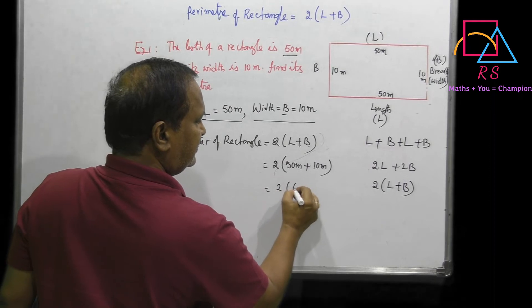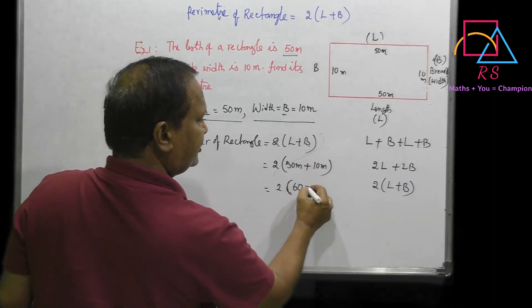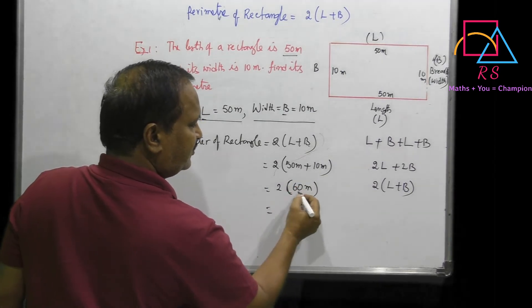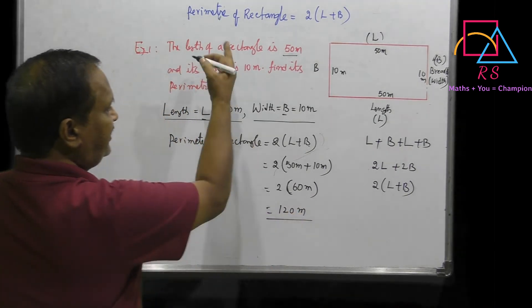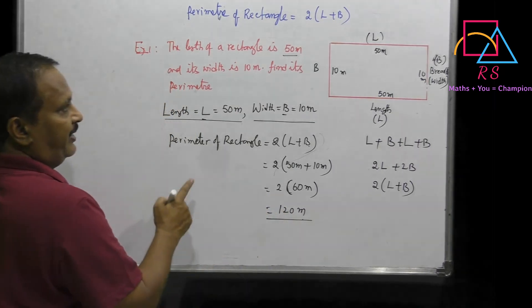50 meters plus 10 meters equals 60 meters. Then 2 into 60 equals 120 meters. The unit of perimeter should be only meters, not meters square. So the perimeter of this rectangle is 120 meters.